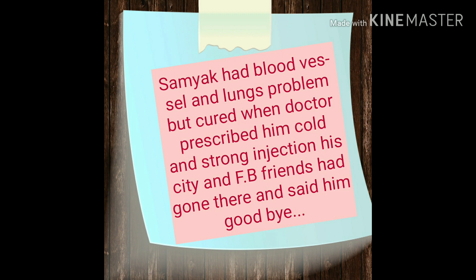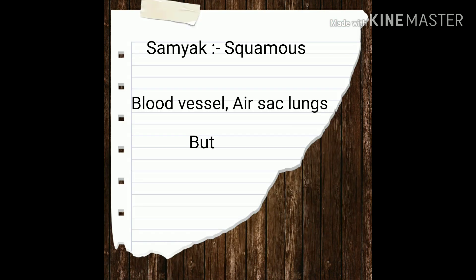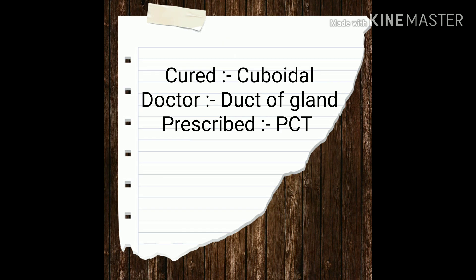Now I will explain each word in the sentence. The first word is 'Samyak' — Samyak represents squamous epithelium, which is found in blood vessels and air sacs of the lungs. Next is 'cured' — cured represents cuboidal epithelium, which is found in ducts of glands and PCT.